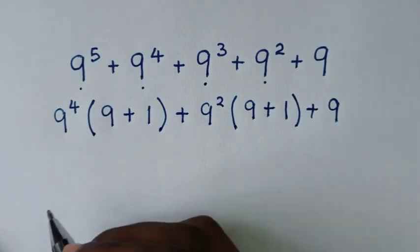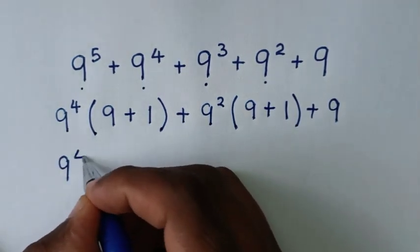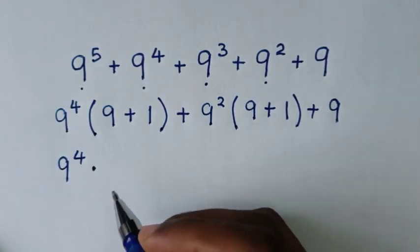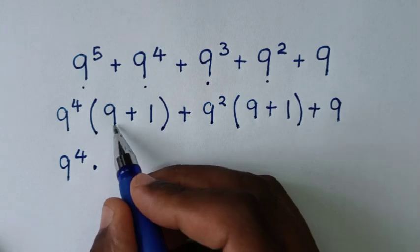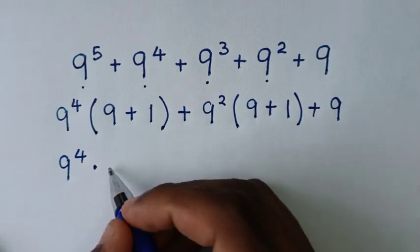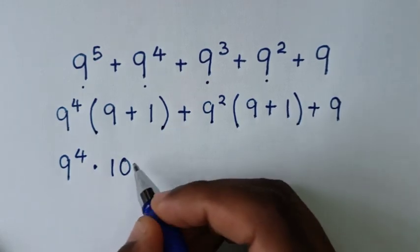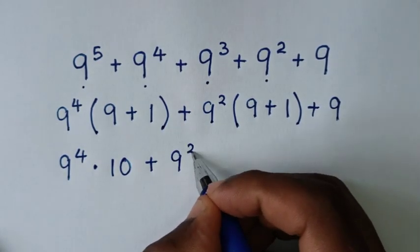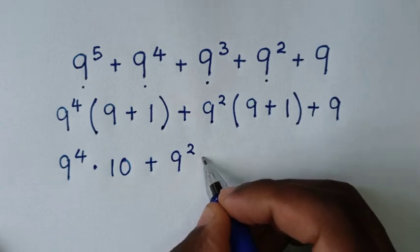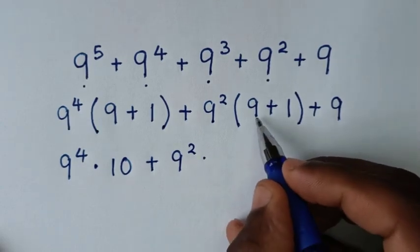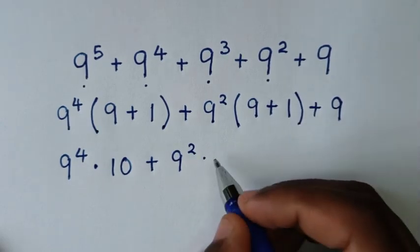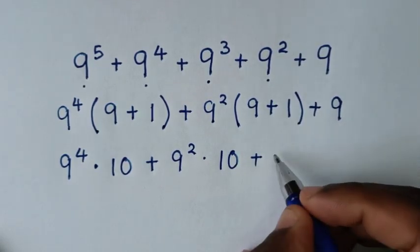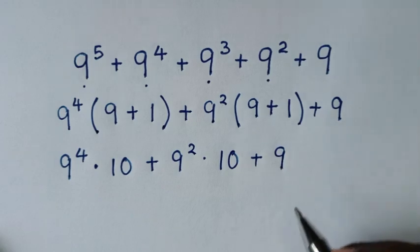Then in the next step, it will be 9 power 4 times — from here 9 plus 1, it is 10. Then plus 9 power 2 times 9 plus 1, it is 10. Then plus this 9.